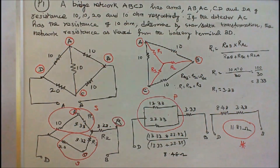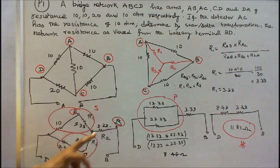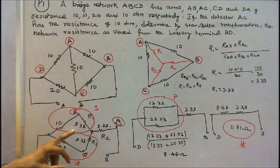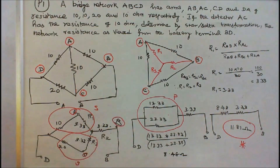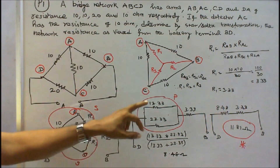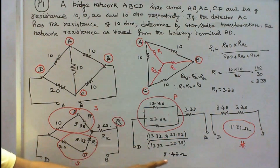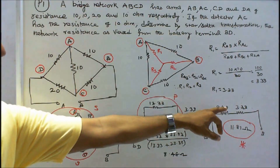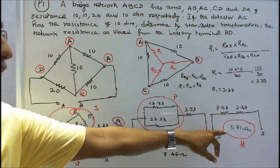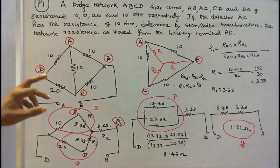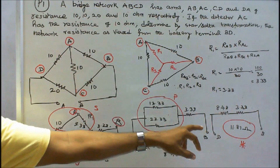Now I redraw the diagram. This is A, B, C with values 3.33, 3.33, and 3.33. These two are in series: 3.33 + 10 = 13.33. These two are in series: 20 + 3.33 = 23.33. These two are in parallel: 13.33 × 23.33 divided by 13.33 + 23.33 equals 8.48 ohms. The 8.48 ohms is in series with 3.33, so the total resistance across terminal BD is equal to 11.81 ohms.